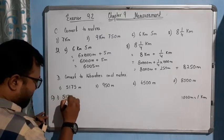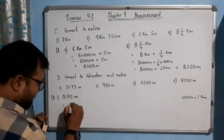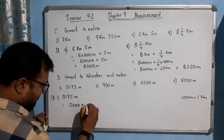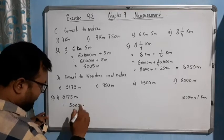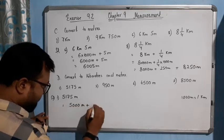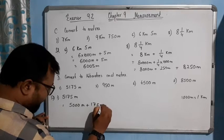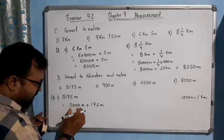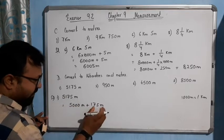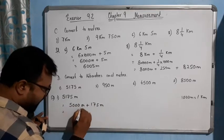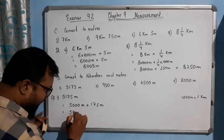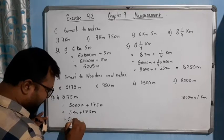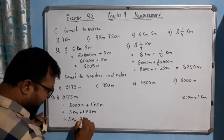5175 meters means 5000 meters plus 175 meters. Since 1000 meters has three zeros, I take 5000 out separately and then 175 separately. 5000 meters equals 5 kilometers, so the answer is 5 kilometers 175 meters.